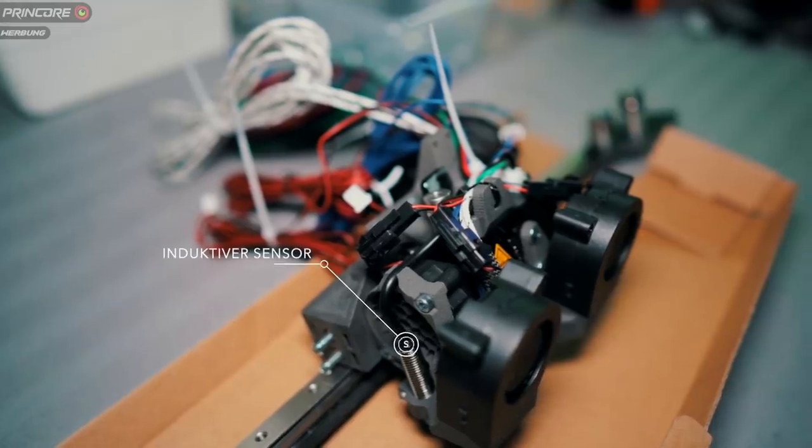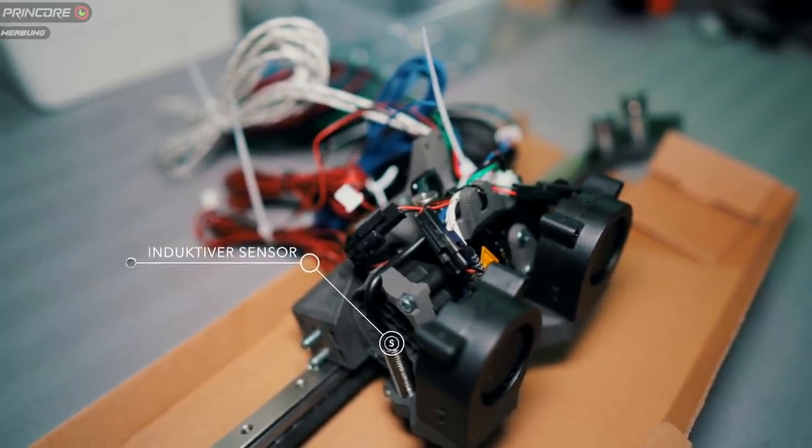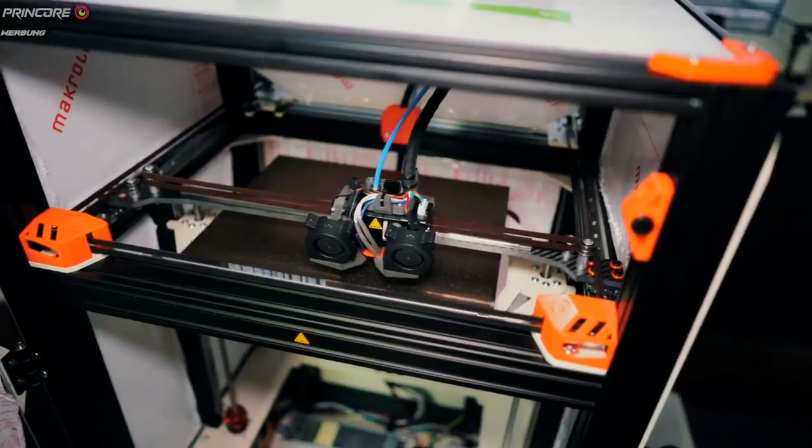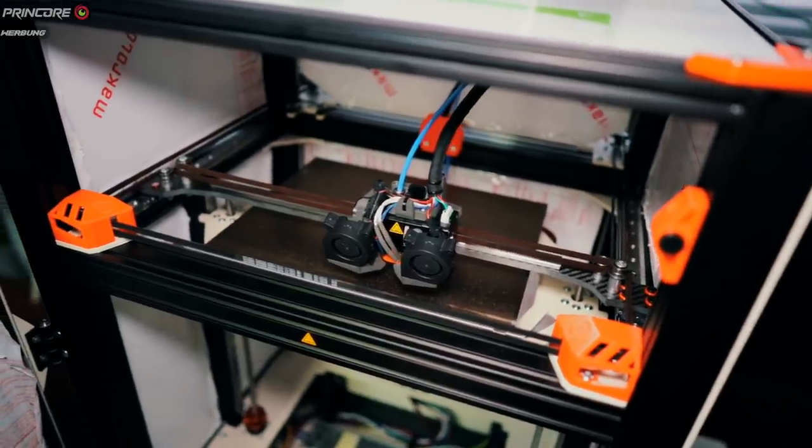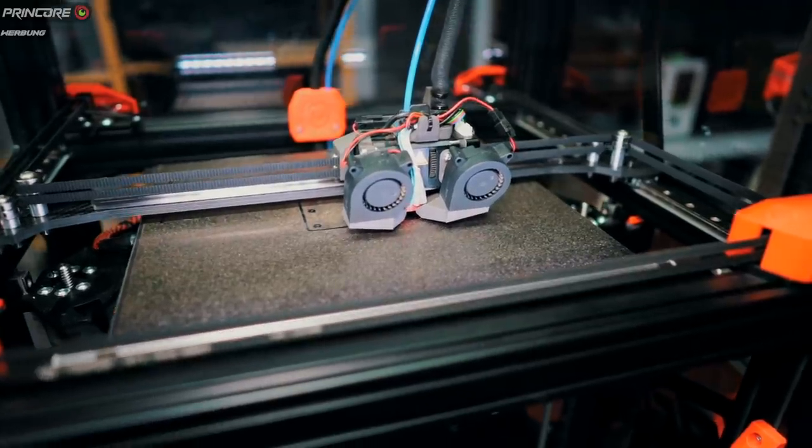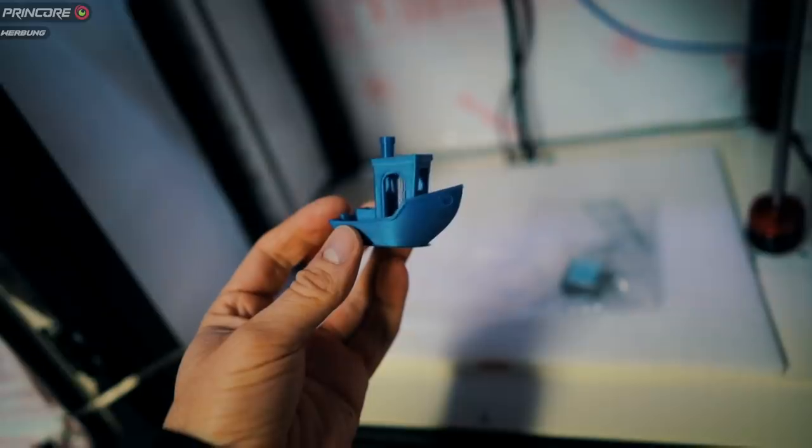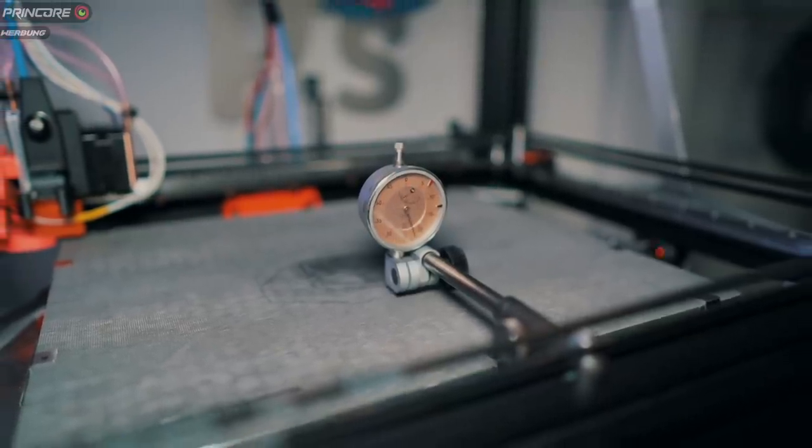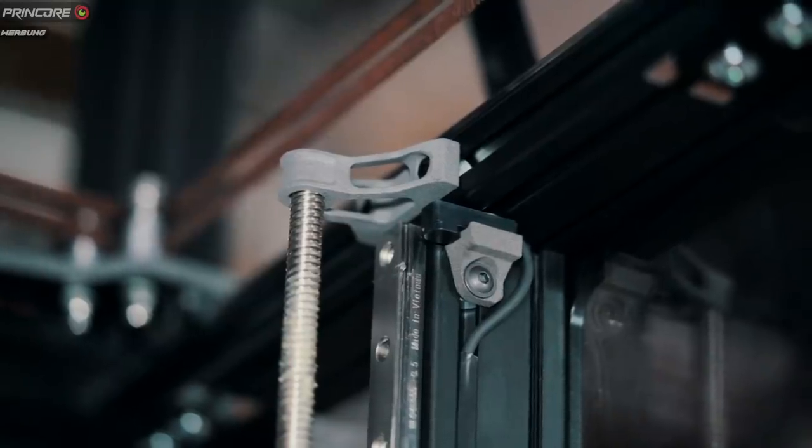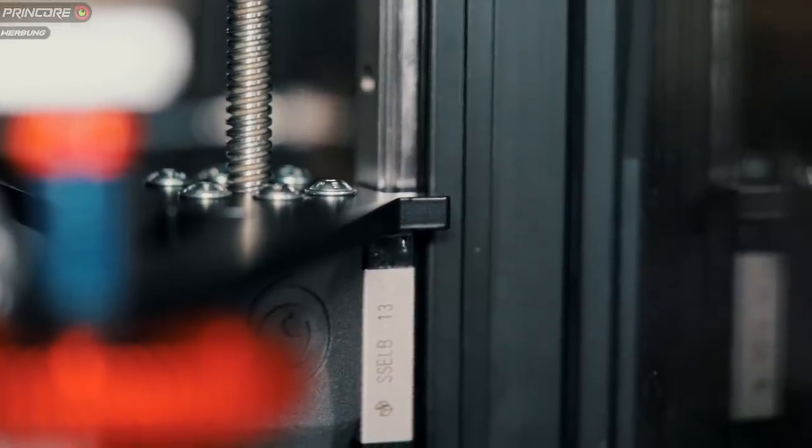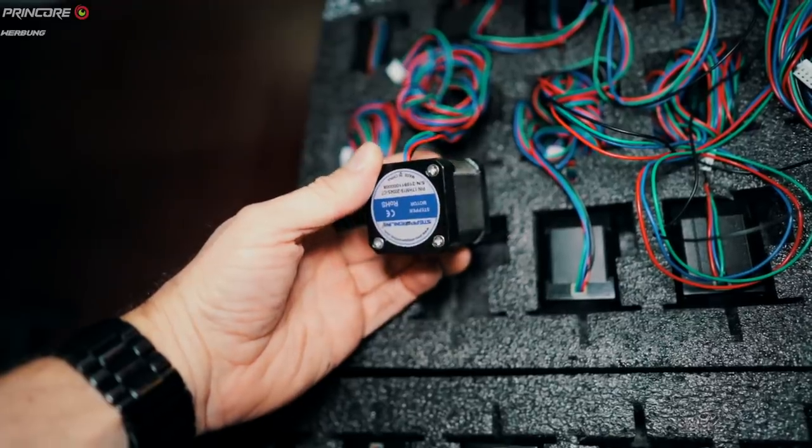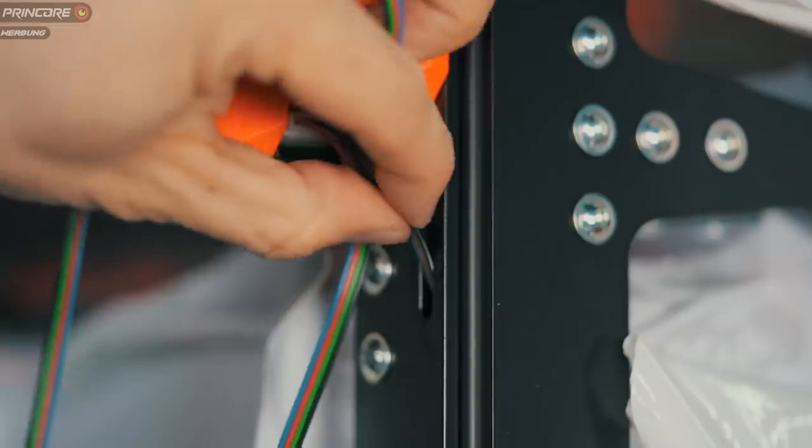Auf der linken Seite des Extruders befindet sich der induktive Näherungssensor zum Abtasten der Druckoberfläche. Dieser vermisst die Druckoberfläche vor jedem Druck, erstellt ein virtuelles Netz und gleicht eventuelle Unebenheiten softwaretechnisch aus. Um gleichzeitig eine stets parallele Druckoberfläche zwischen den beiden Z-Antrieben zu gewährleisten, wird das Druckbett zusätzlich und bei jedem Anfahren der Nullposition über zwei weitere Näherungssensoren am Druckbett parallel gestellt. Angetrieben wird der Core XY Aufbau von zwei NEMA 17 Motoren mit einer 0,9 Grad Auflösung statt der üblichen 1,8 Grad.